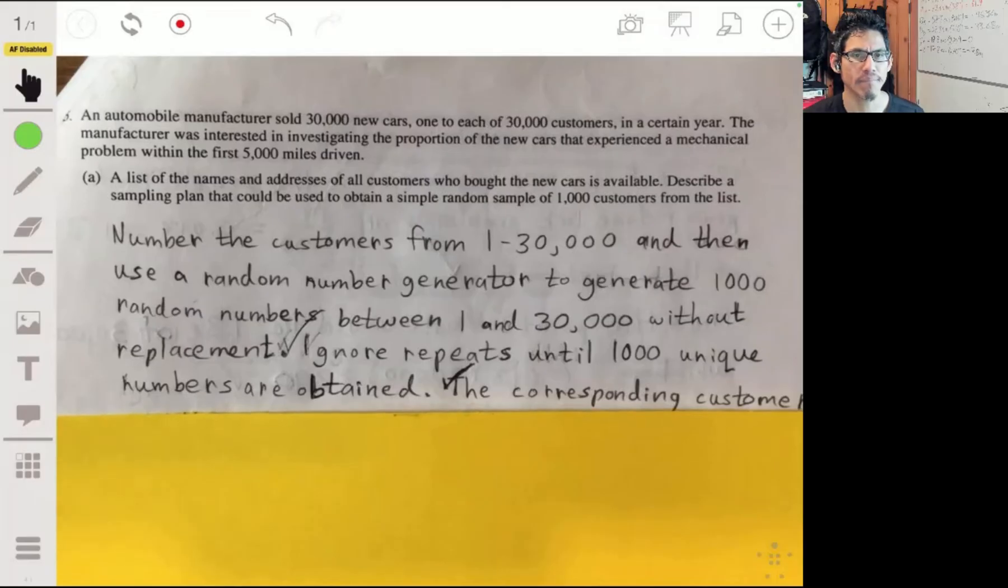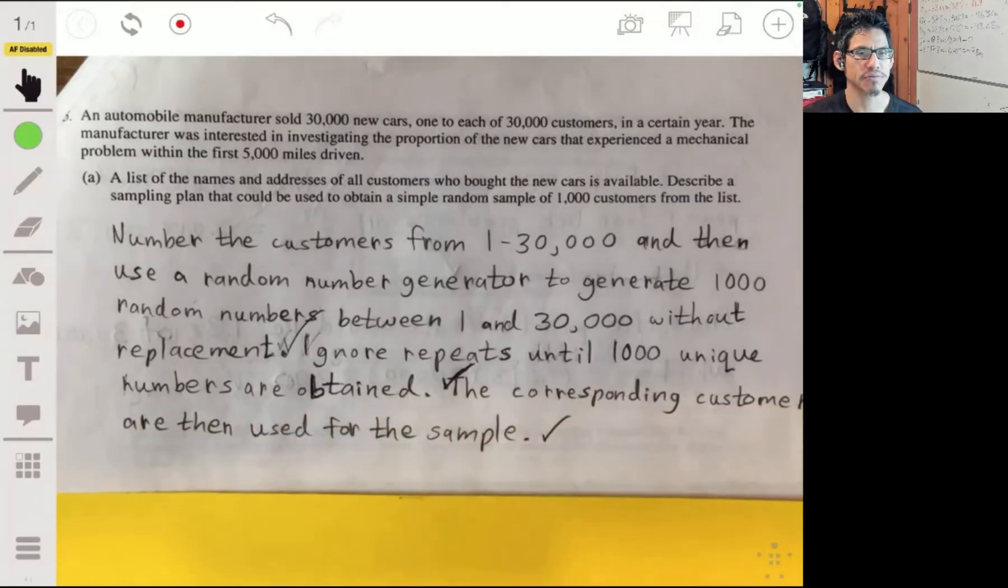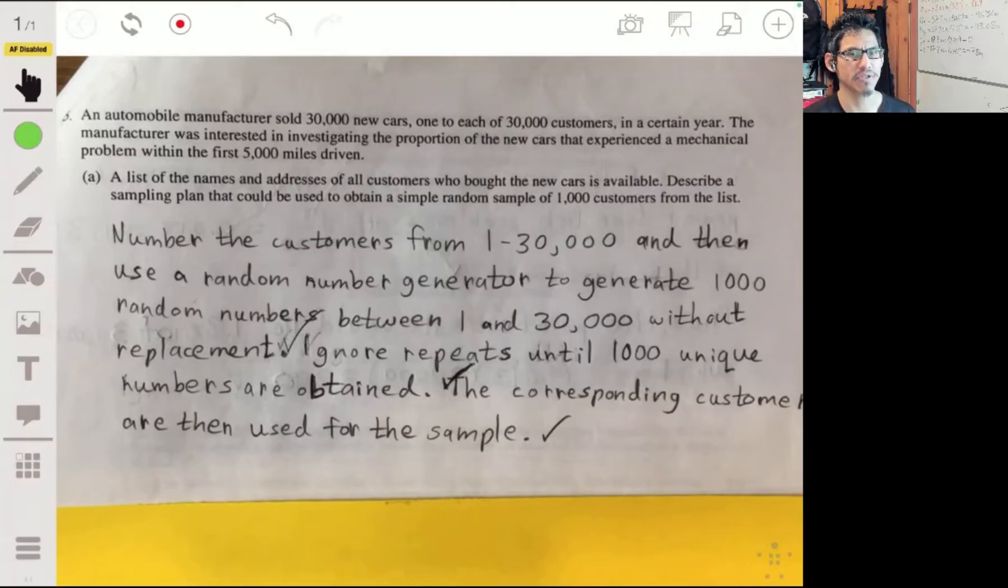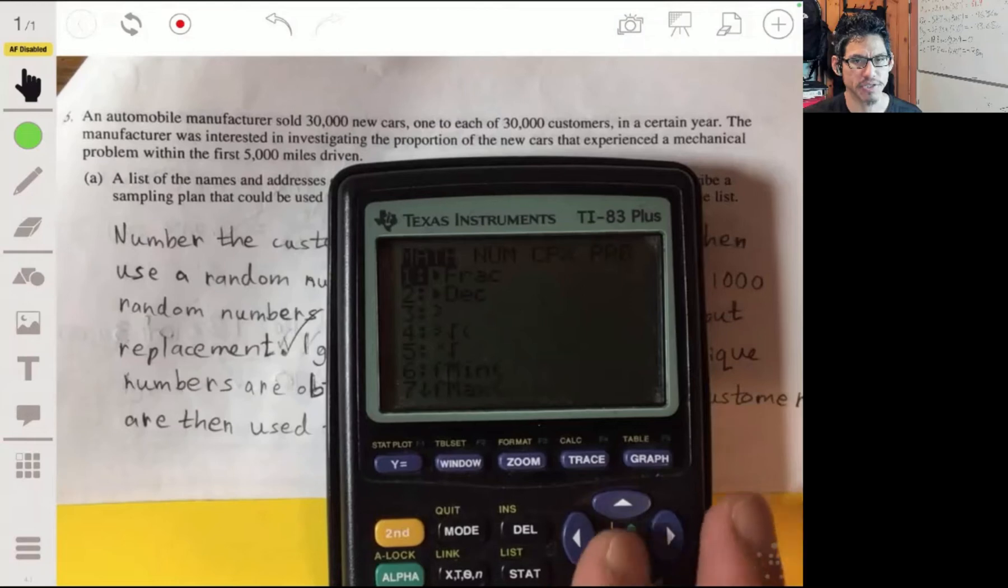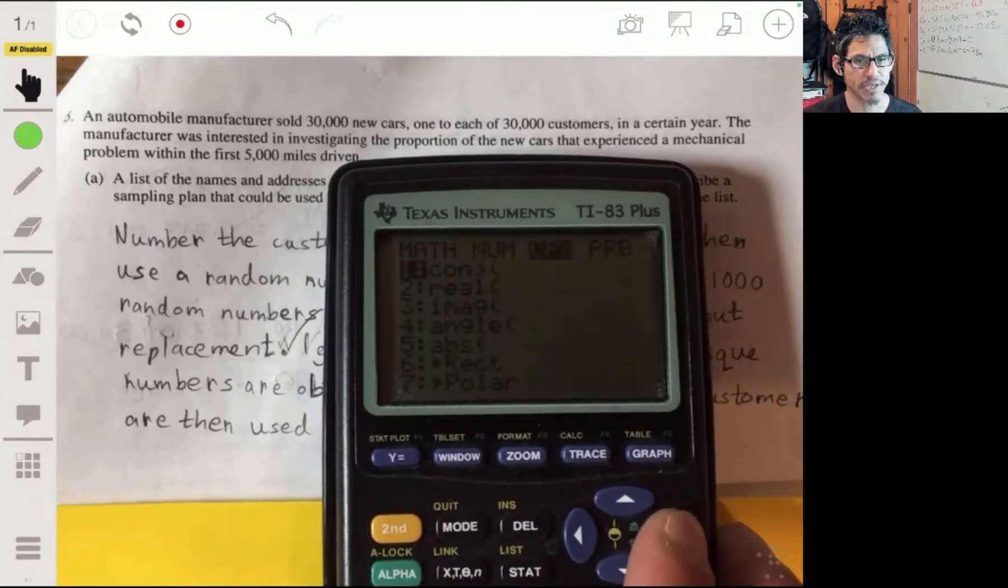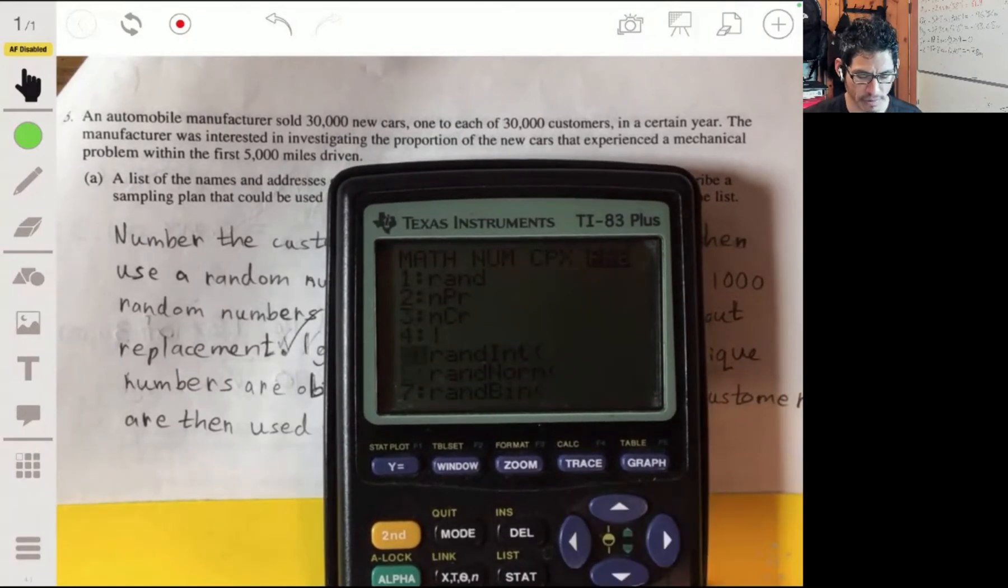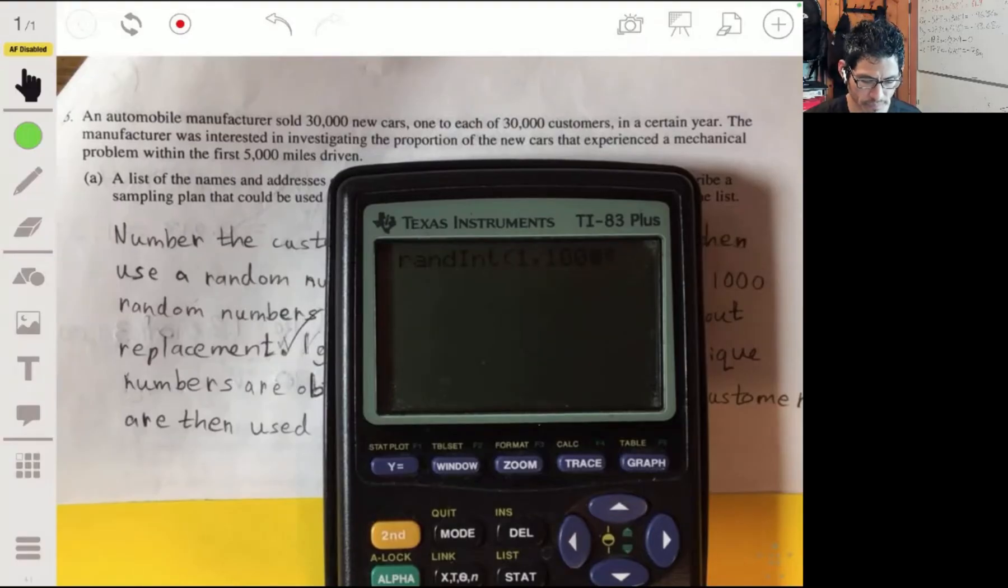Then what you're going to do is pick a thousand of those numbers randomly somehow. In your calculator, you don't have to actually do it in the problem, you just make sure you mention it. There's actually a random number generator you can pick that will randomly pick numbers from a set of numbers, like one to a thousand. It's going to pick numbers like that.